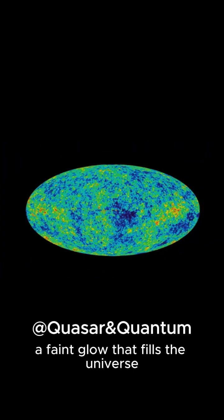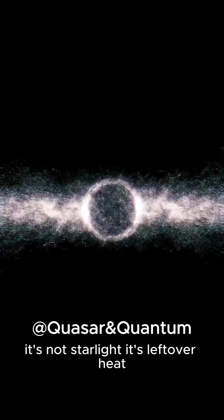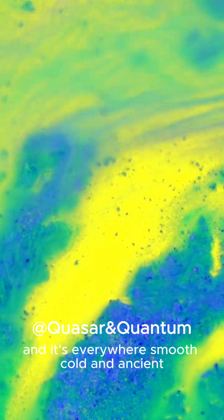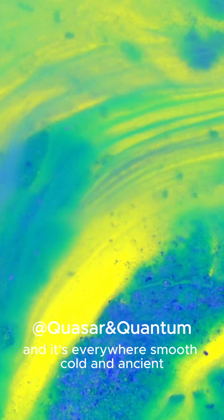Second, the cosmic microwave background, a faint glow that fills the universe. It's not starlight, it's leftover heat from when the universe was just 380,000 years old. And it's everywhere, smooth, cold and ancient.